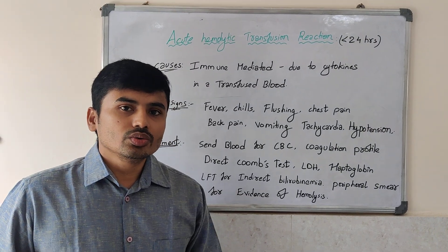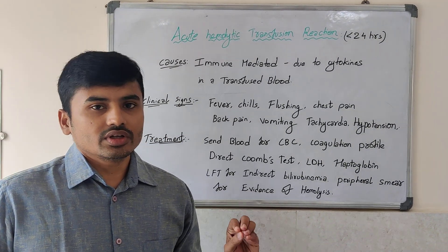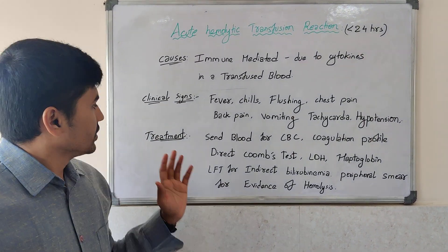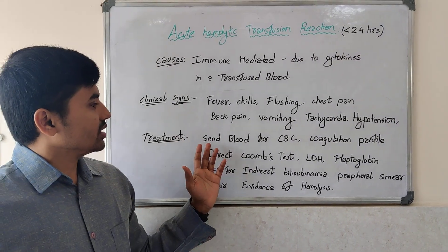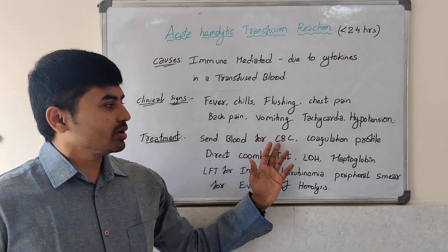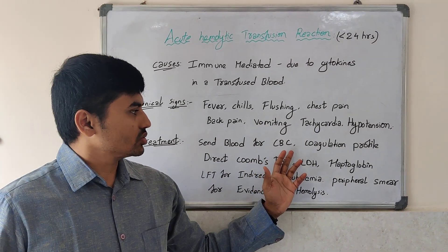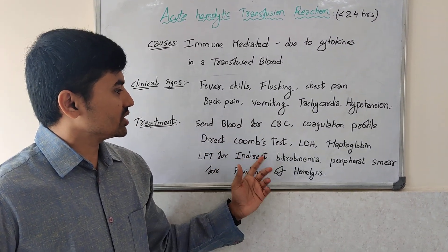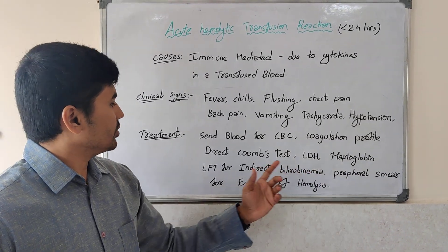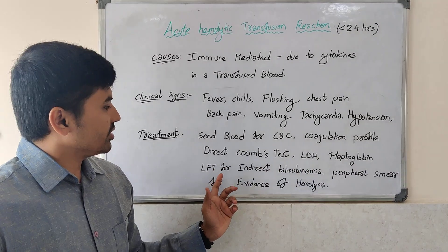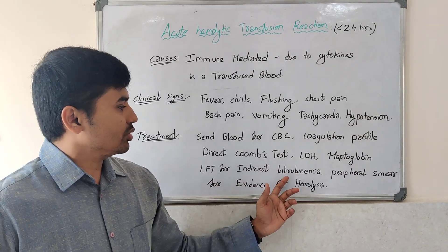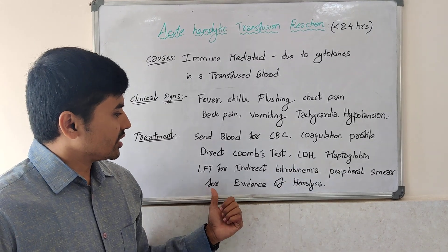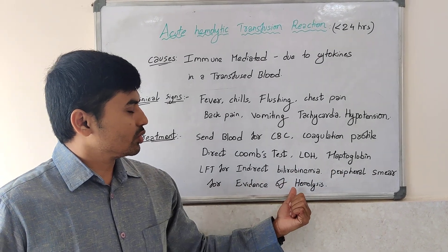When there is an acute hemolytic transfusion reaction, send the blood for complete blood counts, coagulation profile, direct Coombs test, LDH, haptoglobin, LFT for indirect bilirubinemia, and peripheral smear for any evidence of hemolysis.